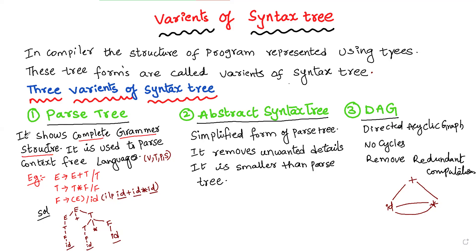The second variant is the abstract syntax tree. Remember, abstract syntax tree is the simplified form of parse tree — it removes unwanted details and is smaller than parse tree. For the same grammar, to write an abstract syntax tree, we remove all the unwanted details.